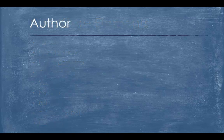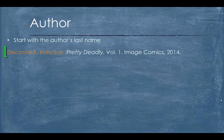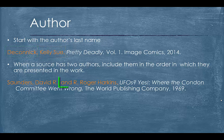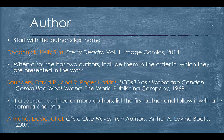In citing a source, you start with the author — the person or organization responsible for creating the work. Start with the author's last name first, then their first name and middle initial if they have one. If the source has two authors, include them in the order in which they are presented in the work, noting that the second author's name starts with their first name, then last. If a source has three or more authors, list the first author and follow it with a comma and et al., meaning 'and others.'